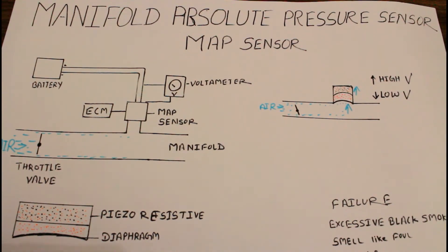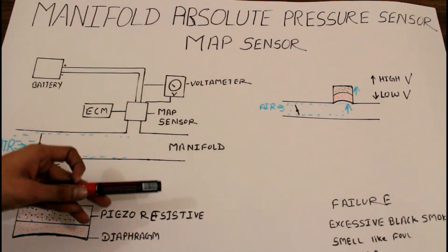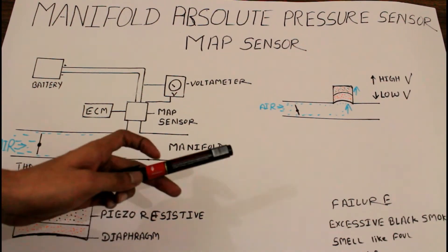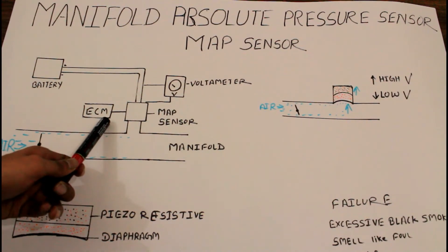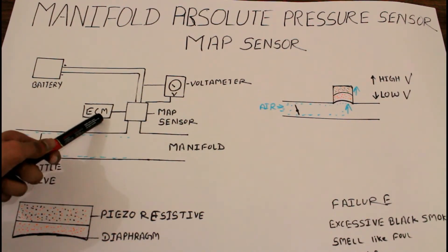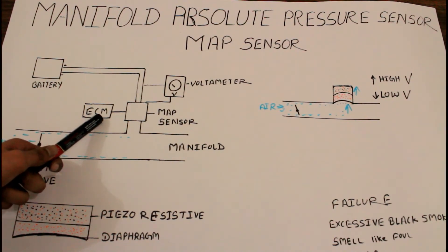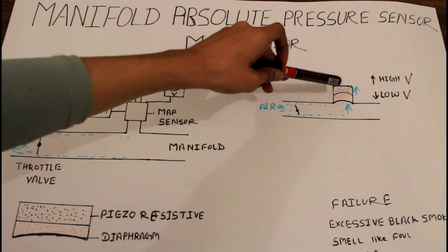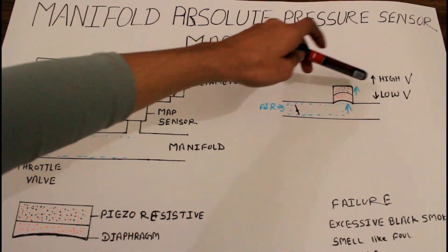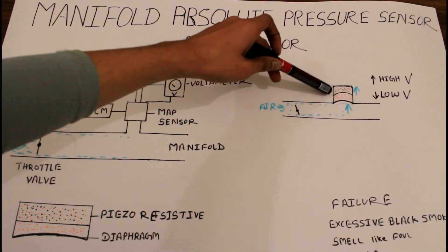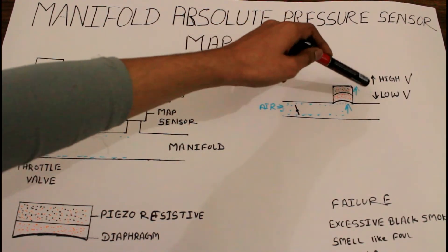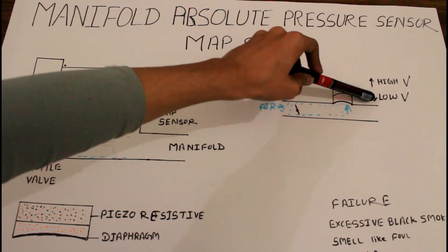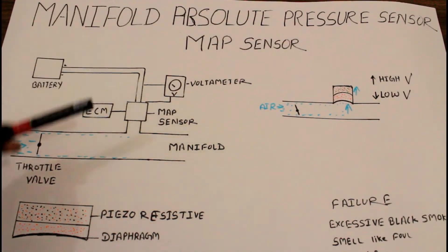Because of the deflection, the resistance changes, and due to the change in resistance, the voltage also changes. This change in voltage is sent to the ECM. The amount of voltage sent depends on the diaphragm position. When the diaphragm is in idle condition — meaning no change in resistance — a low voltage is present, corresponding to the idle condition of the engine.